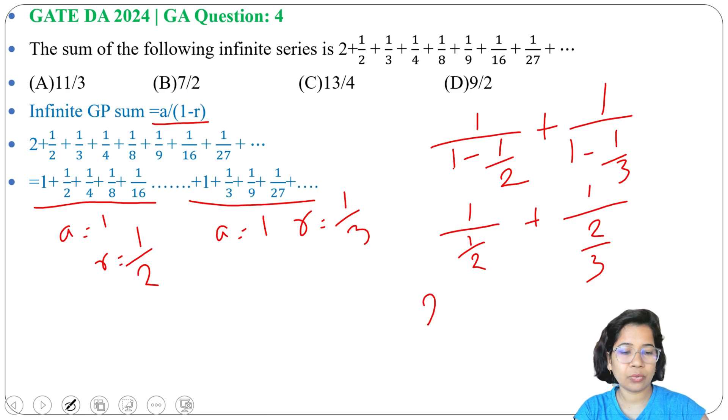2 multiplied by 2 is 4, 4 plus 3 equals 7. The answer will be 7 by 2, and it is present in option B. So the answer will be option B.